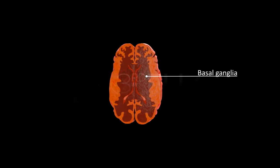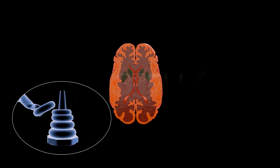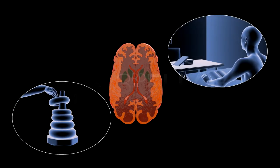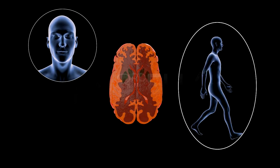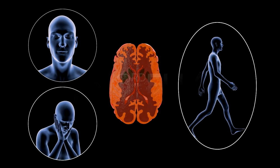The basal ganglia is a group of subcortical nuclei situated at the base of the forebrain. These are associated with a variety of functions, including control of procedural learning, habit learning, eye movements, voluntary movements, and emotion.